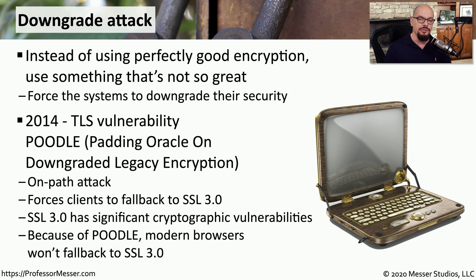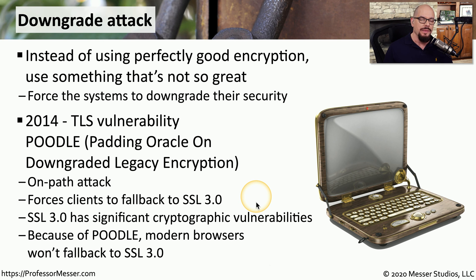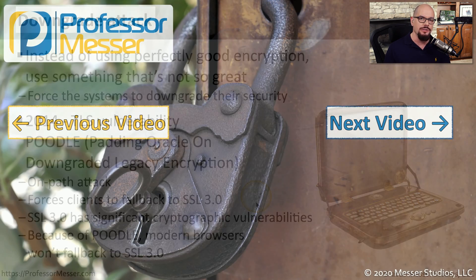They were able to sit in the middle of a conversation — an on-path attack — and forced the two sides to communicate at a much downgraded level of encryption, falling back to SSL version 3.0. With SSL 3.0, there are significant cryptographic vulnerabilities, which is why we no longer use it, and the rest of the conversation was susceptible to decryption by the third party. After this vulnerability was released, web servers were configured to disallow SSL 3.0, and browser configurations changed. These days it's very difficult to find a browser that even supports SSL 3.0 — all because of this POODLE downgrade attack.